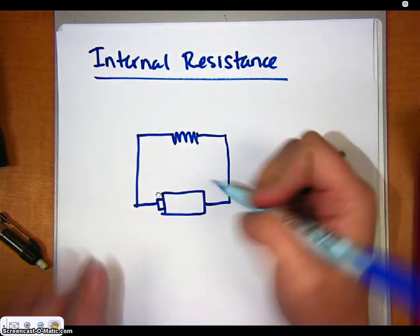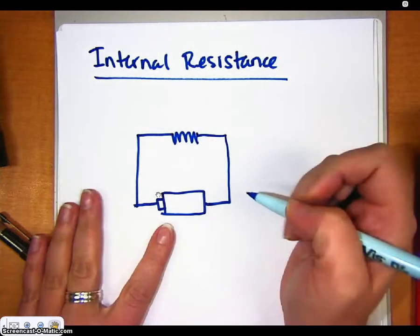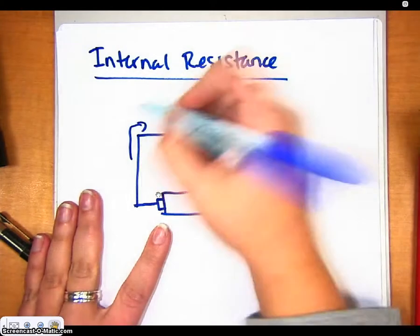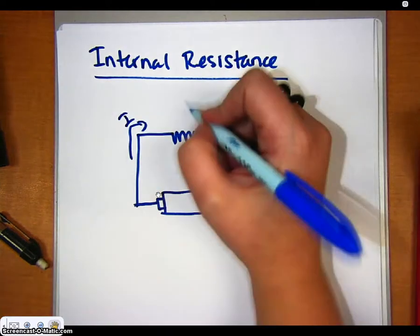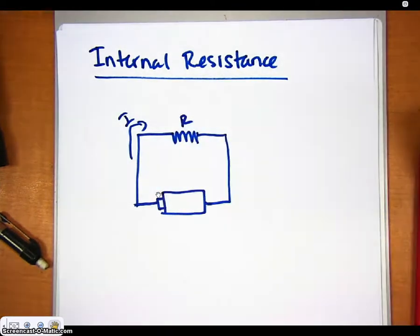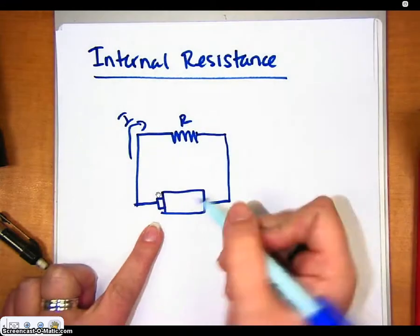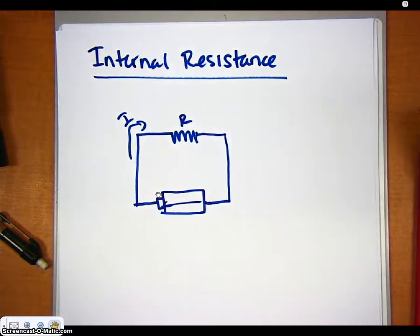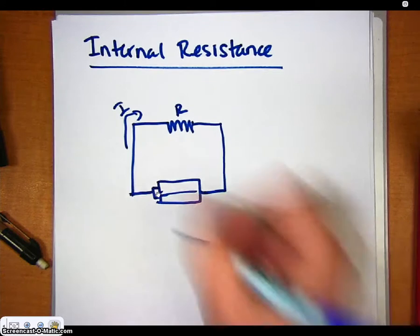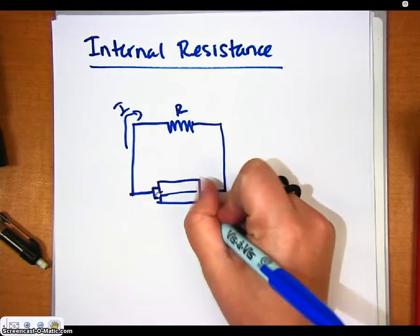As I hook this up and turn it on, current starts to flow from one direction to the other. There's some resistance here, but also as the current travels through the battery, there is some resistance in the voltage source.